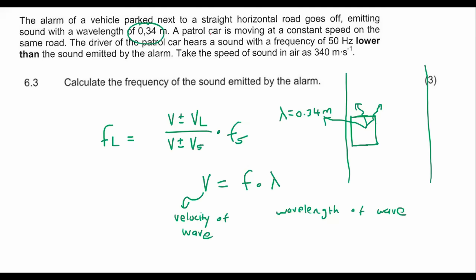All of a sudden, we've got a police car that is going past. The driver of the police car hears a sound with a frequency of 50 hertz lower than the sound emitted by the alarm. So the police driver is hearing a frequency that is less than the alarm of the car. That means the police car is busy driving away. Remember, if the two vehicles are moving away from each other, then the listener will hear a frequency that is lower. The first question says, calculate the frequency of the sound emitted by the alarm.